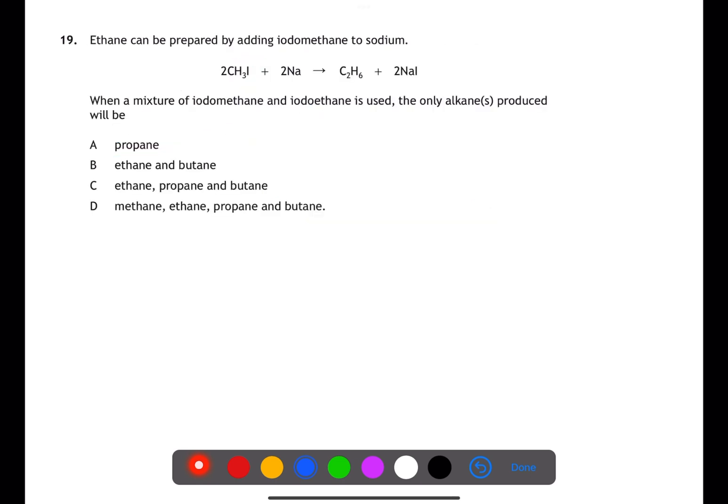Question 19 is a problem solving question looking at synthesis. When you use iodomethane you get ethane produced. Here we're going to use iodomethane and iodoethane so we'll get a mixture of products. If two iodomethanes join together then you will produce ethane. If two iodoethanes join together then you will produce butane. However, if iodomethane and iodoethane join then you will get propane. This means we'll have a mixture of ethane, propane and butane which is C.